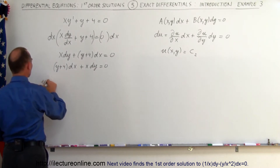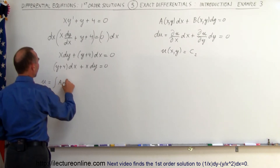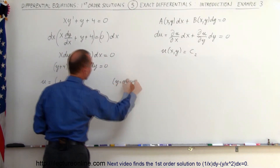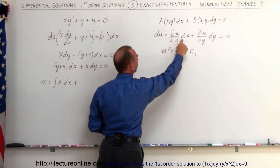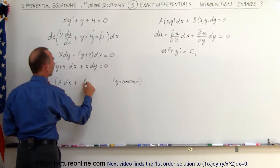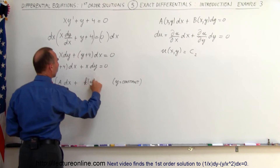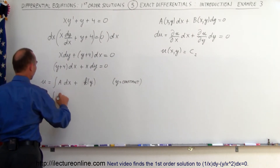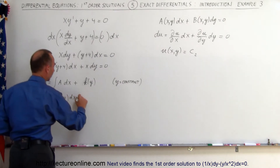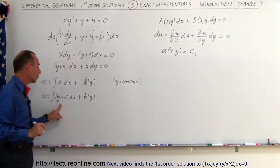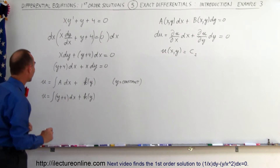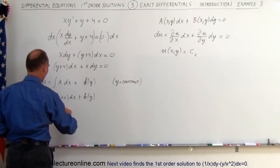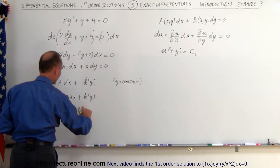We can say that u, the general solution, is equal to the integral of A times dx plus some function — a constant of integration. Since y is treated as a constant when we take the partial derivative with respect to x, the constant of integration will be some function k of y. So since A equals y plus 4, u equals the integral of (y plus 4) dx plus k(y), which gives us (y plus 4) times x plus k(y).